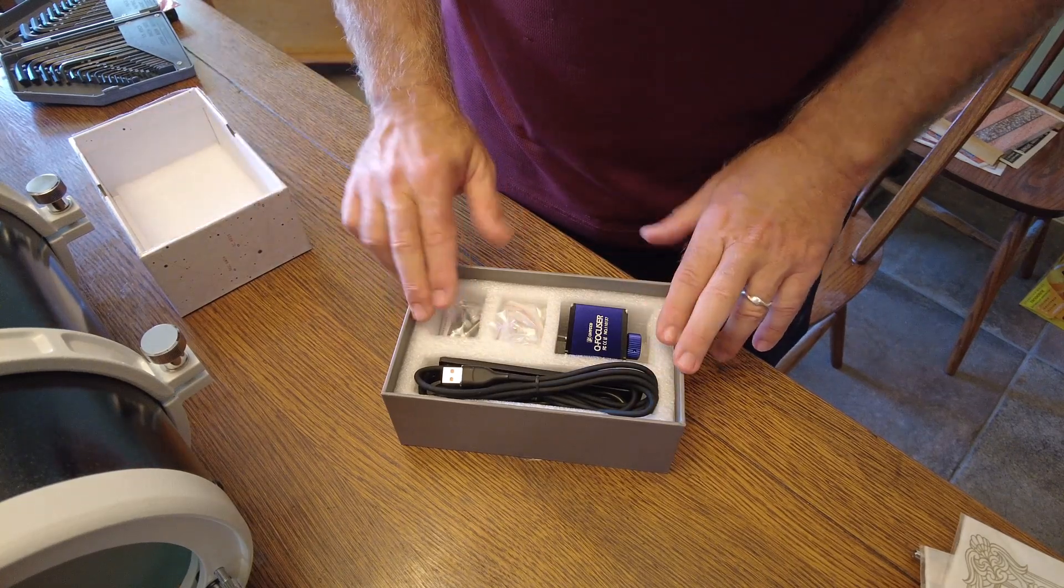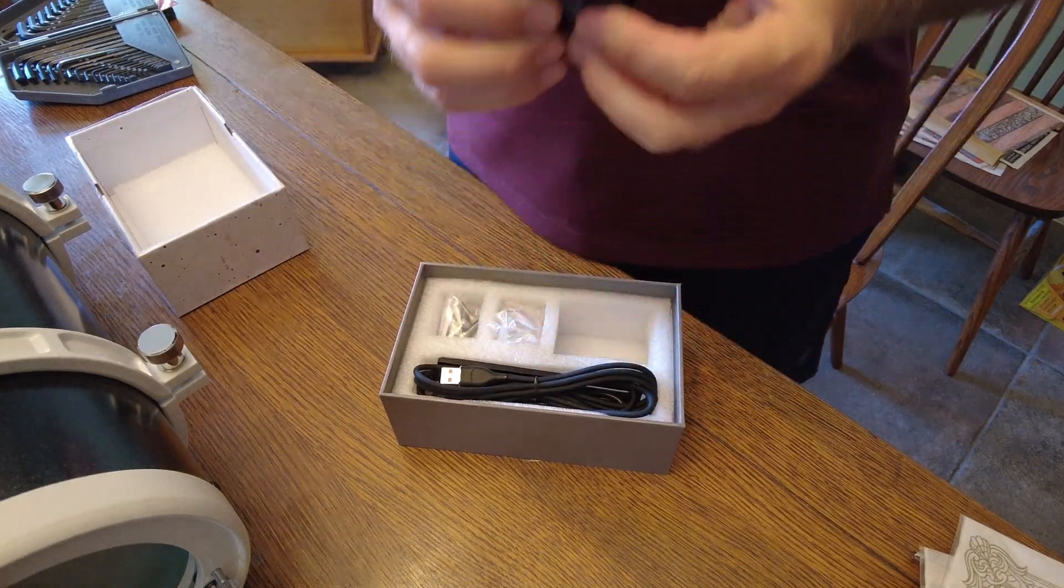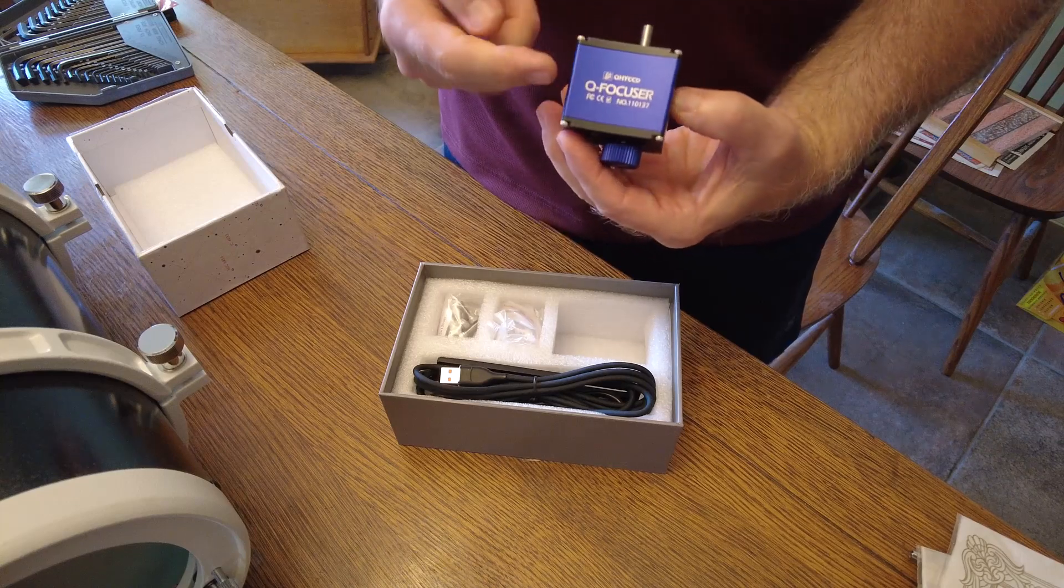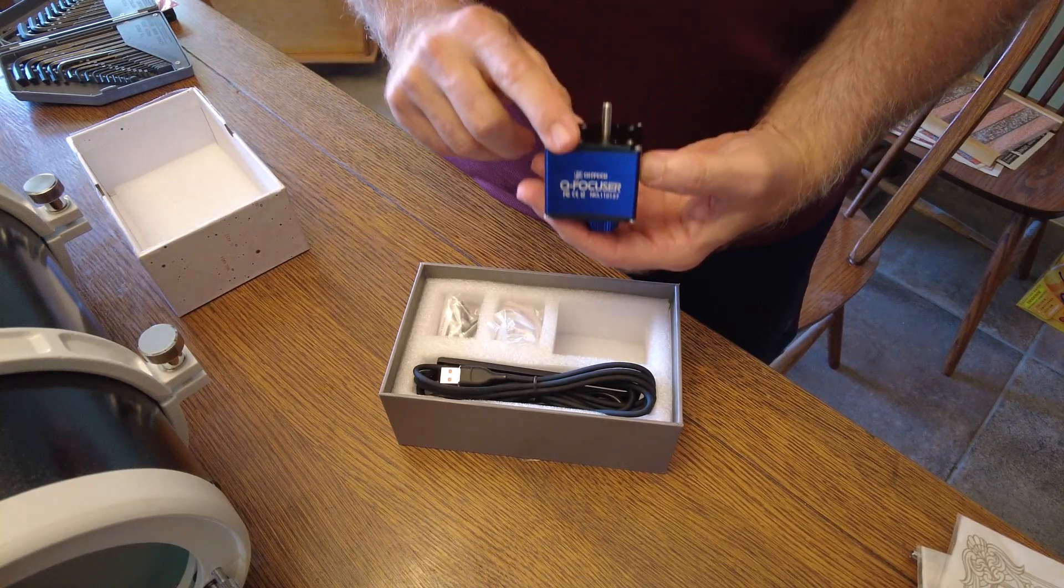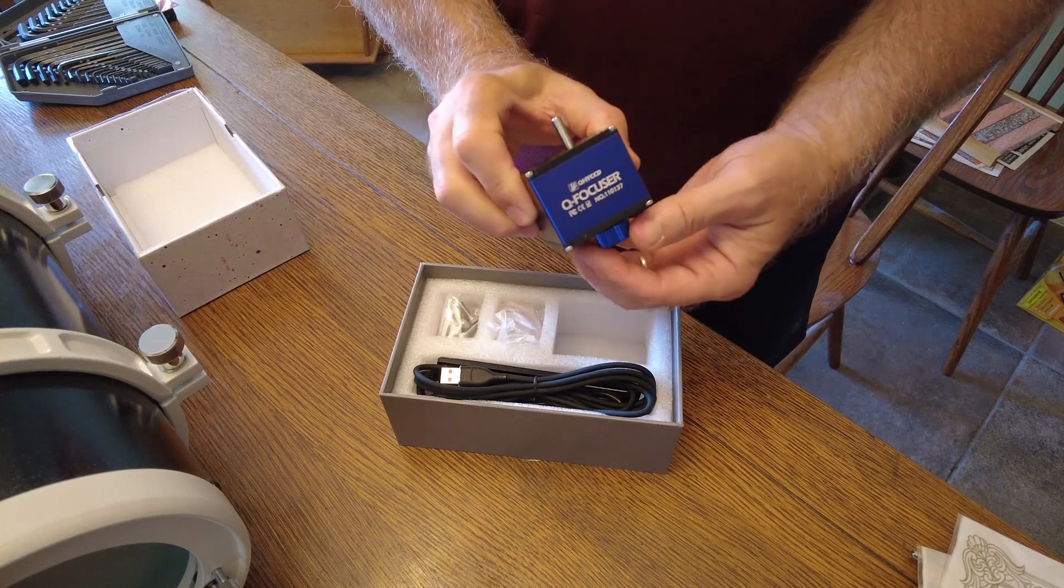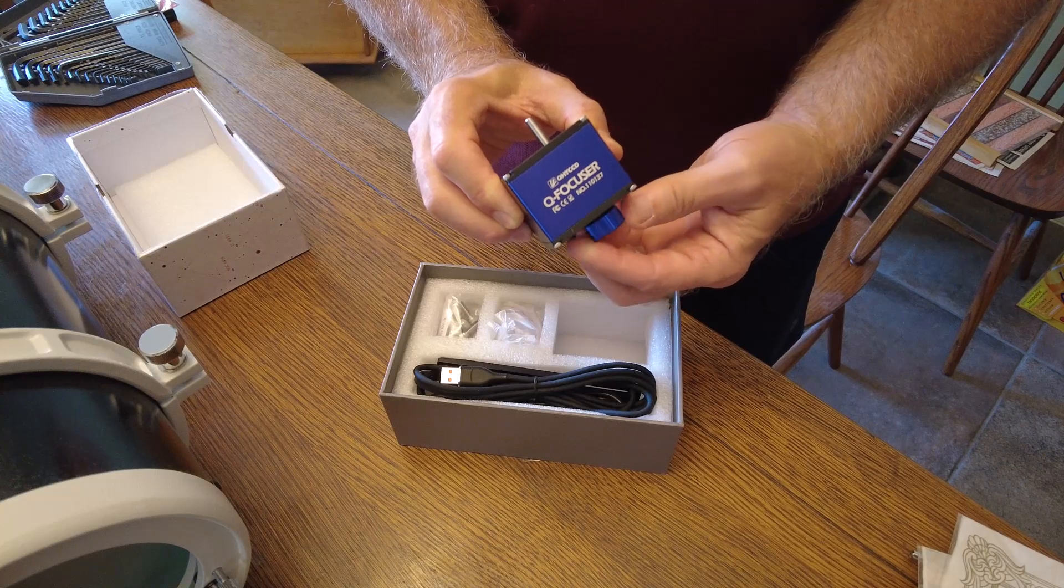But essentially what you get, of course, is the new Q focuser. Here's the Q focuser. This particular version, which is the high precision version, allows you to basically turn your focus knob on your telescope.